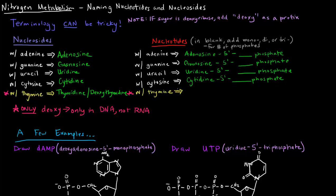With thymidine, you don't give it that name. You would only give it the deoxy name. So it would be deoxythymidine five prime and then however many phosphates. Again, because you would not find this in RNA, it's not a ribonucleotide, it's a deoxyribonucleotide only.